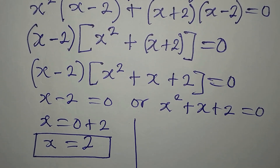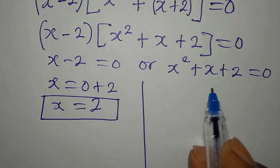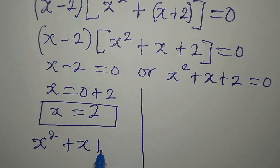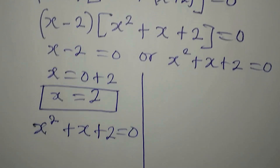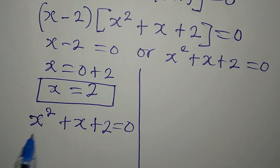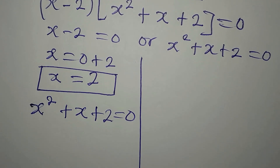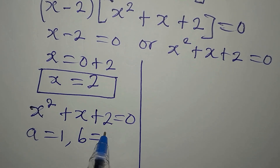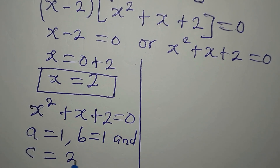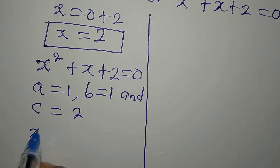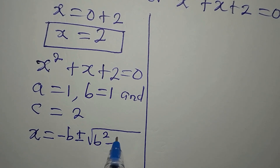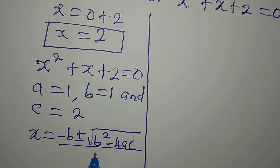We still need to work on the second factor x squared plus x plus 2 equals 0, because we are expected to have more solutions. We can apply the quadratic formula. For the formula we need the values of A, B, and C. Our A is 1, our B is 1, and our C is the constant which is 2. The formula is: x equals minus B plus or minus square root of B squared minus 4AC, all over 2A.